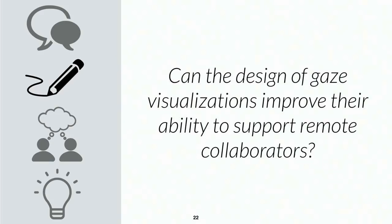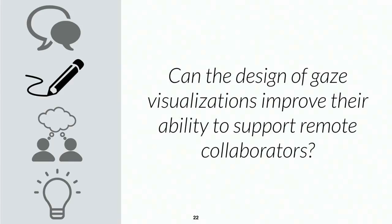One thing that might be causing this is the design. Can this be attributed to the way we represented where someone was looking? I chose an eye cursor — a direct representation of the coordinate stream of where you're looking — which absorbs all of this noise and displays it to you. What if we designed it differently? Could we reduce the distracting characteristics of the gaze visualization and come away with only the benefits, making it a more beneficial experience for remote collaboration? This leads to the next question: can the design of gaze visualizations improve their ability to support remote collaborators?